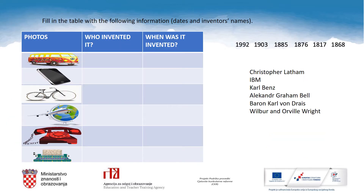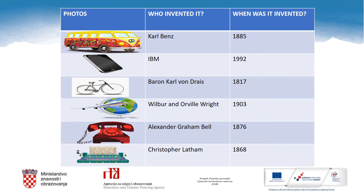Here is a table with some inventions. Take your notebook, copy the table, and try to guess who invented the inventions and when. The following information on the right side of the slide will help you. Here are the answers: the car was invented in 1885 by Karl Benz, a German engineer, designer, and inventor.